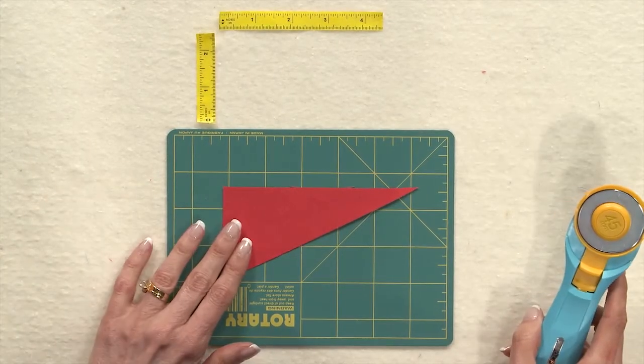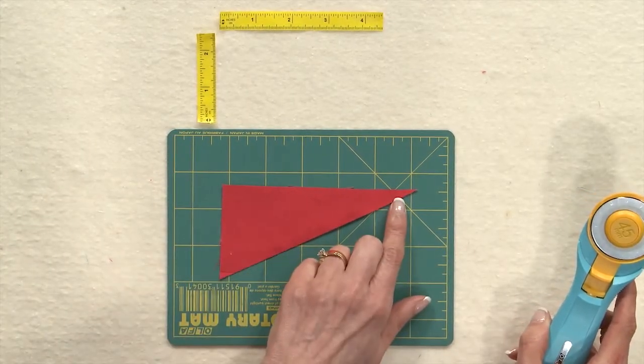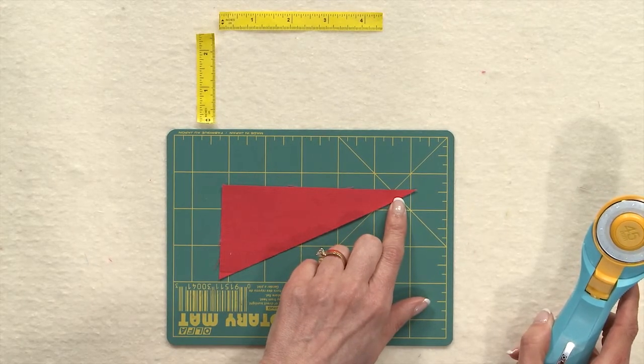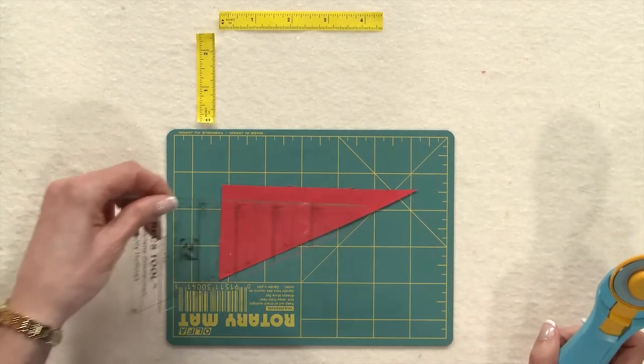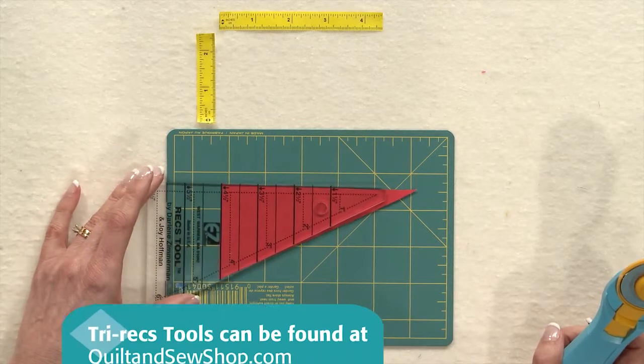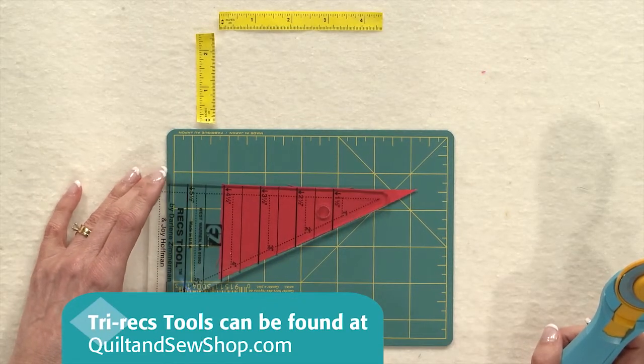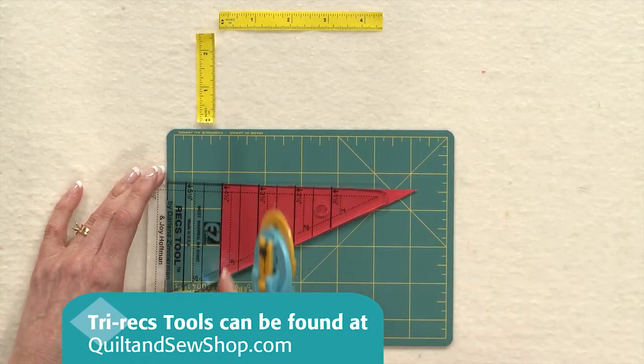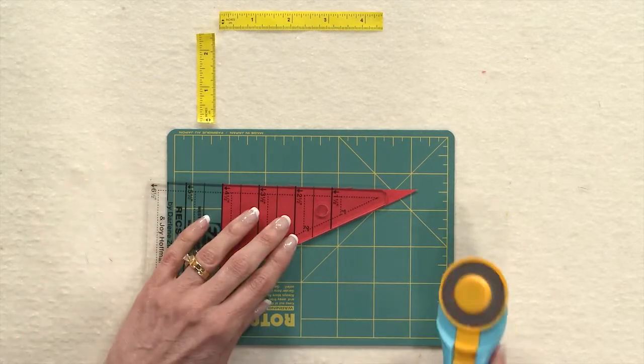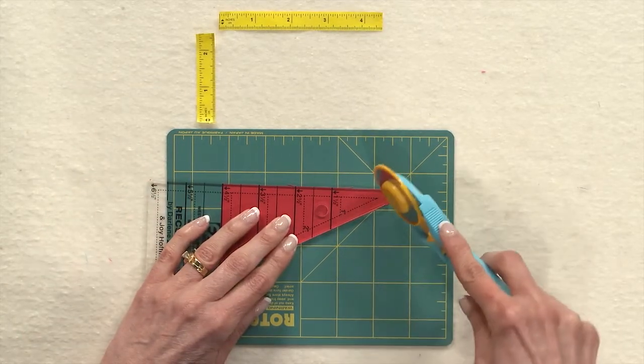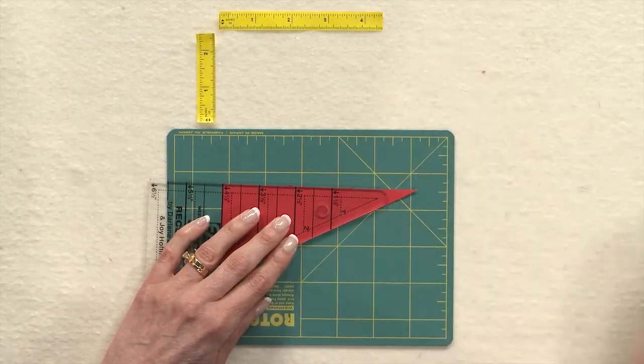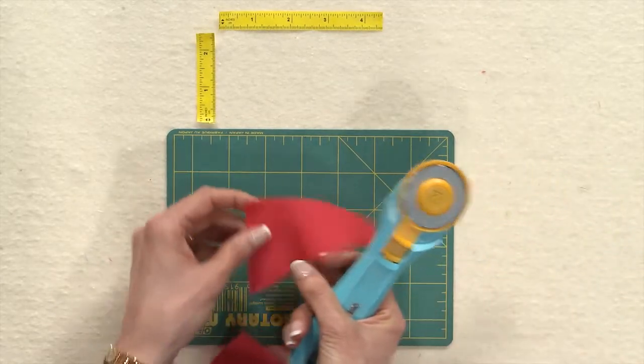I found the best way to make this work is to trim this long point off of the triangle. And the best tool I've found is the tri-rex tool. And I'm just going to line up the four and a half inch line on this side and I'm going to trim off the point so that it looks like this.